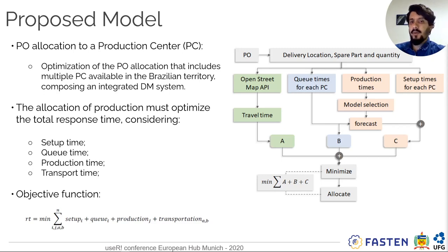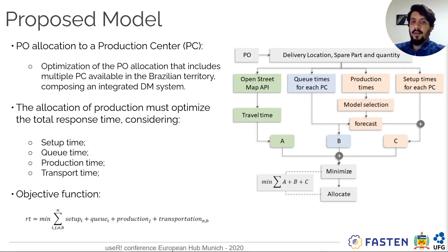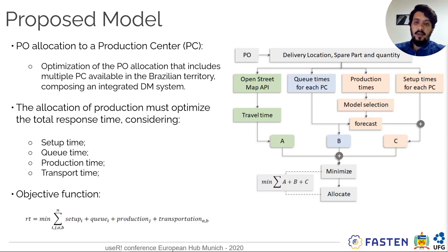For each production order request, we use an external application called OpenStreetMaps, an open-source API, to get real-time transportation time between multiple places. For skill times, production times, and setup times, we get this information from our IoT platform. For production times specifically, we consume historical time series of production data, estimate a set of forecast models, do the forecast, and select the best one. With all this information together, we apply a search algorithm to find the best option combining these data, minimize the objective function, and perform the best allocation.